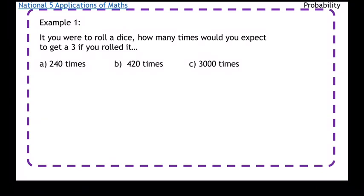So firstly we're going to work out the probability of getting a three on a dice. So probability of getting three on a dice is just 1 over 6. So essentially what we're going to do is find a sixth of 240. So 6 into 240: 6 into 24 goes 4 times, 6 into 0 is 0. So you would expect to do it 40 times.